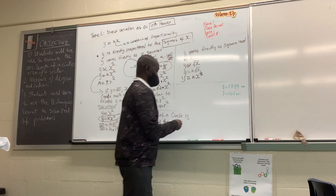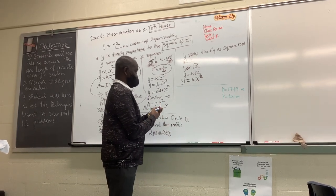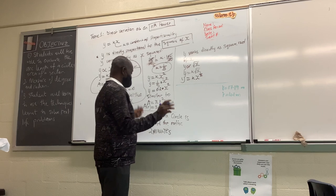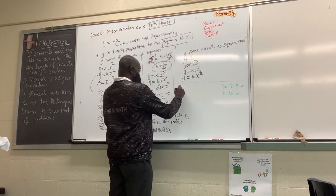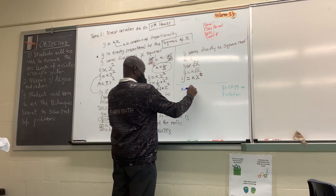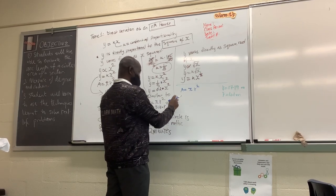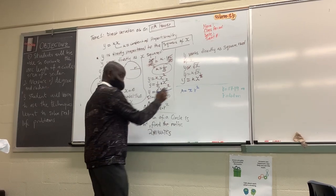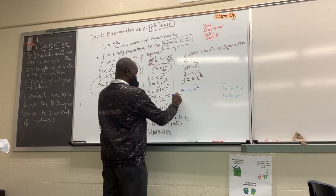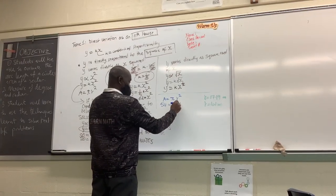I put 54 in the area and divided it by 3.14. Did you write the formula? Area is equal to pi radius squared. Did you write that? Yes. And then you substituted with 54, so you have 54 equal to 3.14...